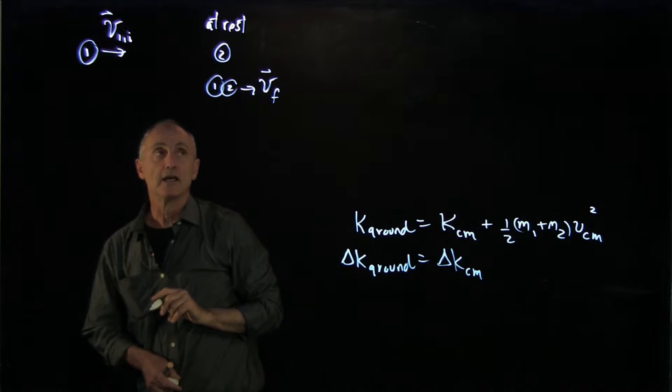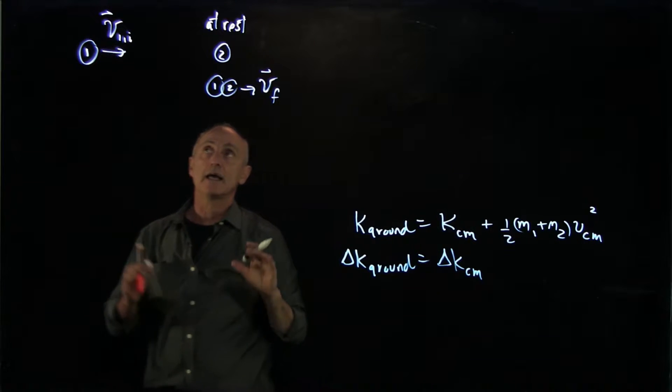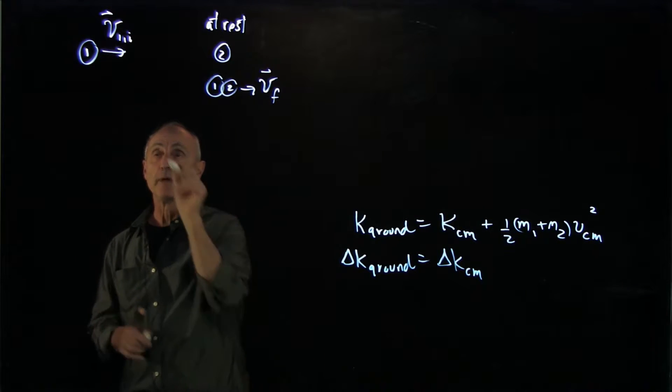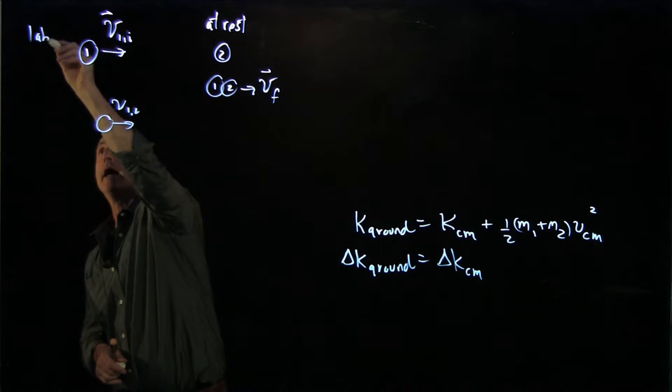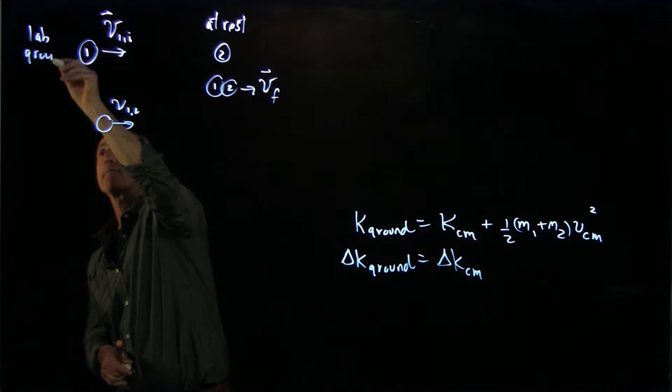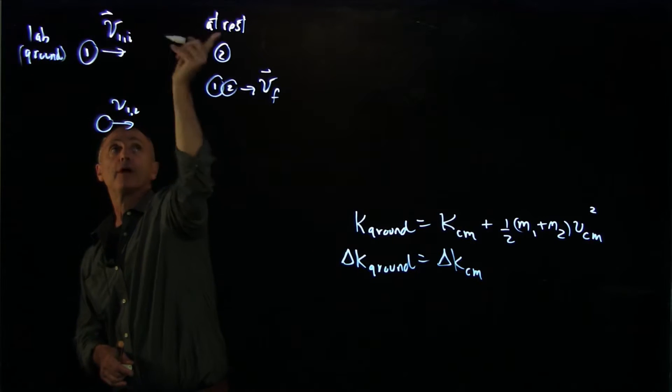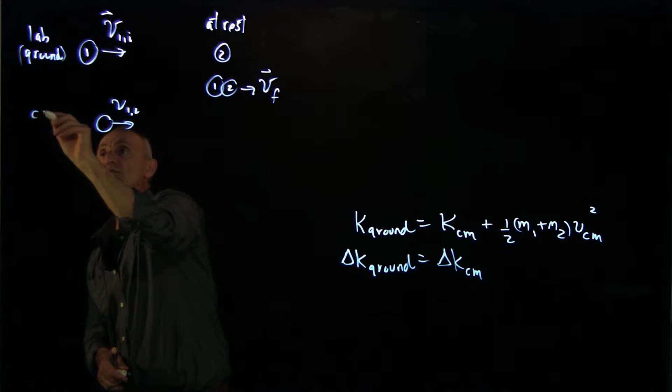Here's a collision in the ground frame. In the center of mass frame, the two objects - so here's our lab or ground frame. I can call it the lab frame because that one's at rest, and this is the CM frame.